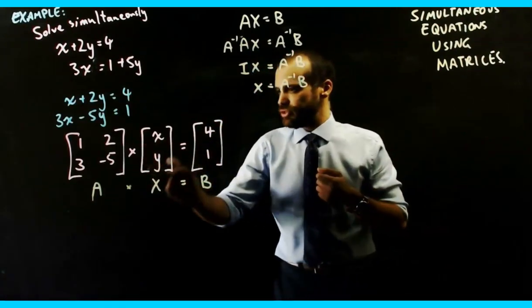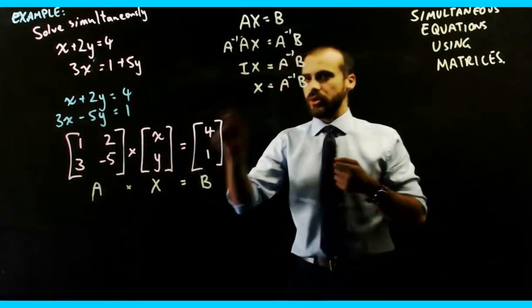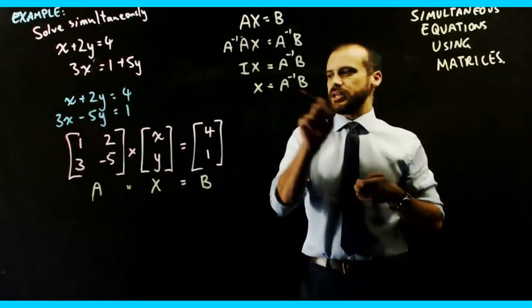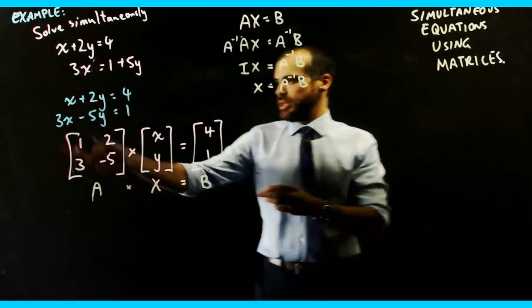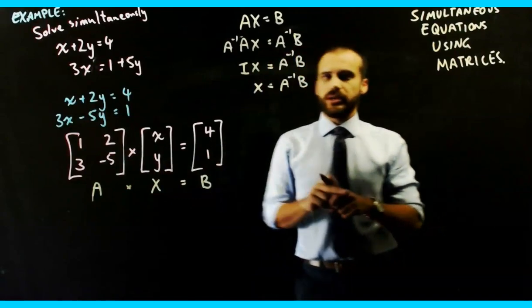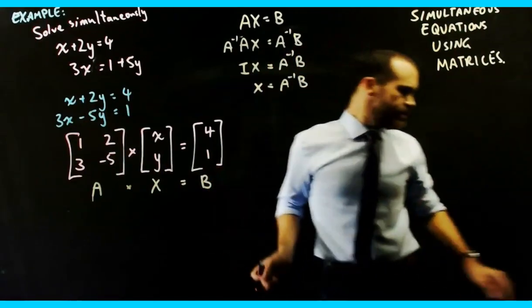So we know that matrix x, which is going to be x and y, is equal to the inverse of A times B. So now we just need to find the inverse of A, multiply it by B, and we'll have an answer.